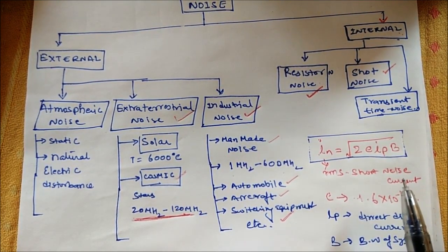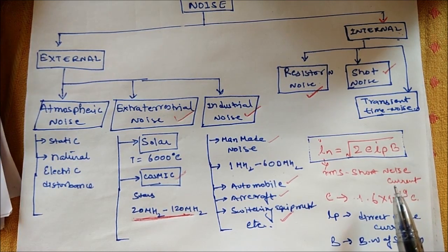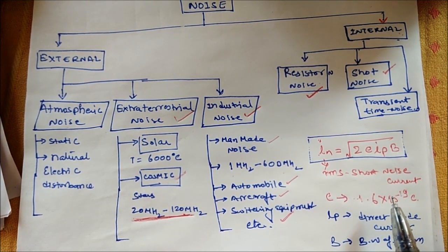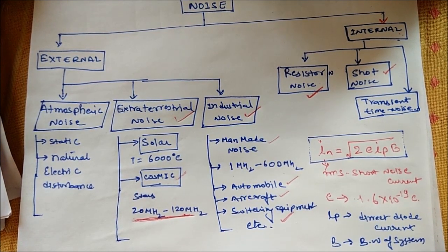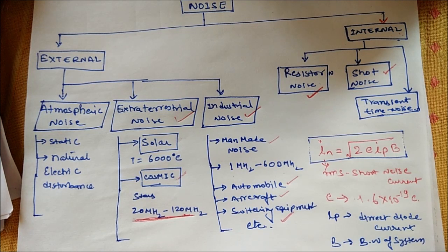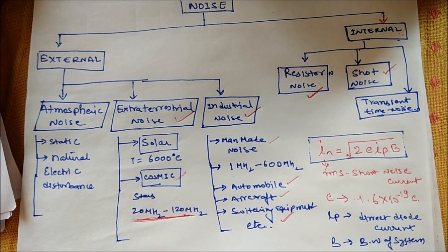Now we take up transit time noise. Transit time noise generally occurs in an amplifier. It is the time taken by an electron to travel from the emitter to the collector of a transistor. It becomes significant when the signal being amplified is at a high frequency and beyond.